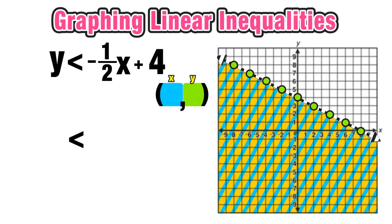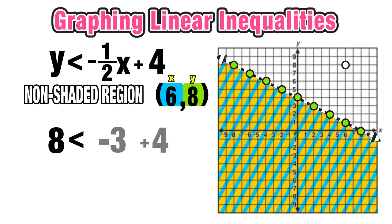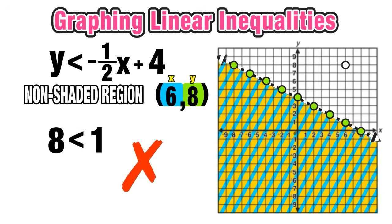Finally, a point in the non-shaded region: (6, 8). Substituting x = 6 and y = 8: negative one-half times 6 equals -3, and -3 plus 4 equals 1. We get 8 < 1, which is not true. This confirms why any point in the non-shaded region is not a solution — with a dashed line, only points in the shaded region are in the solution set.